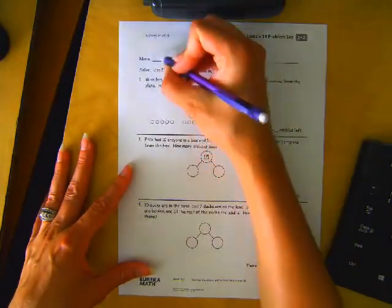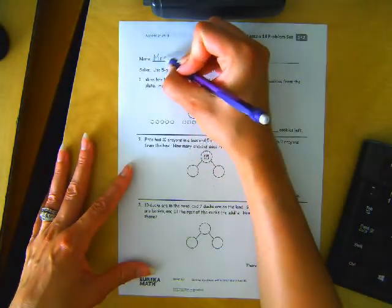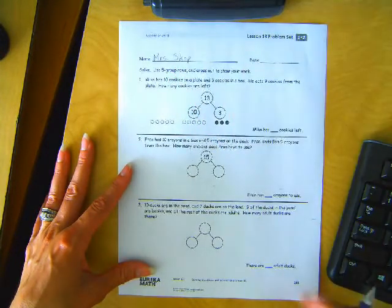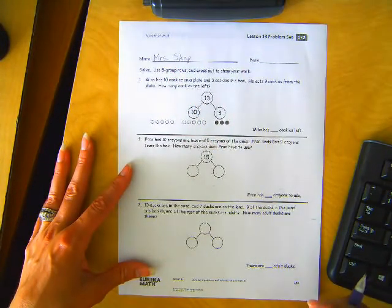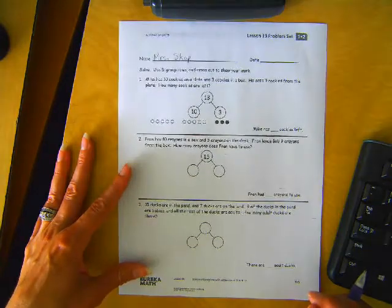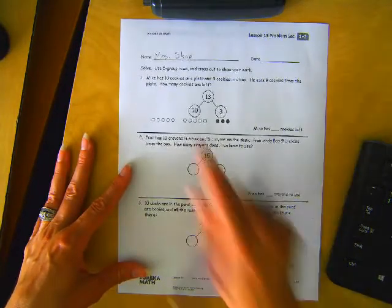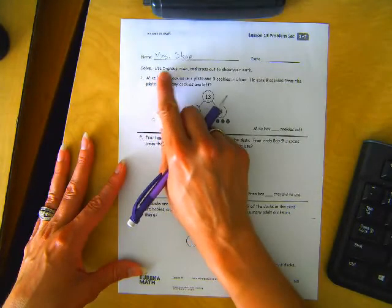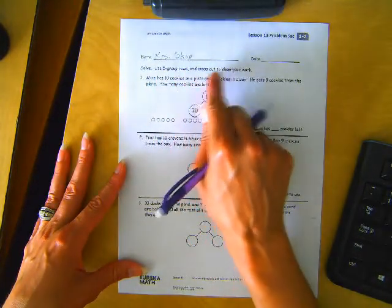Name on your paper. First thing. Here we go. Let's read those directions. Solve. Use five group rows and cross out to show your work.